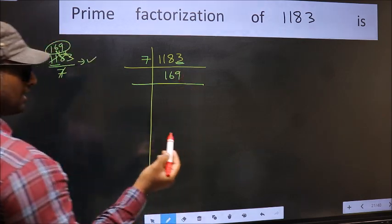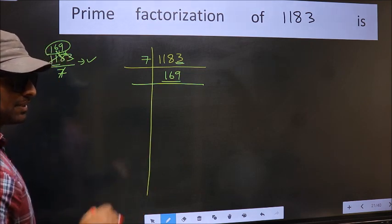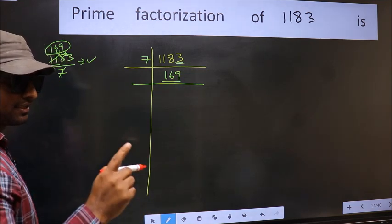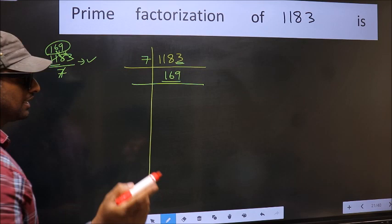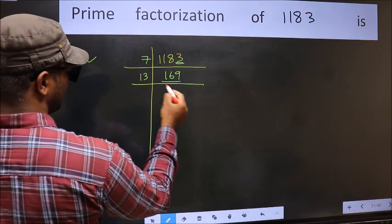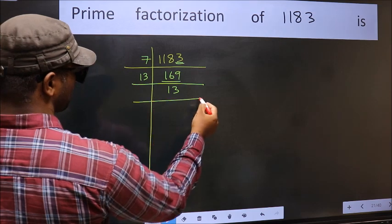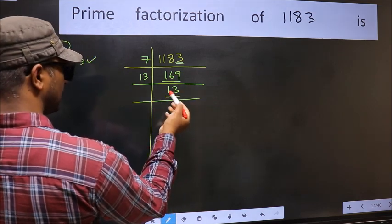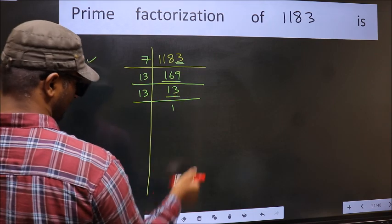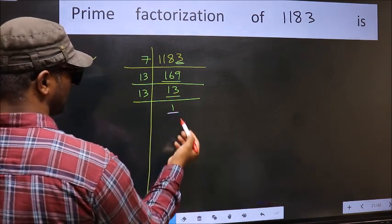Now we have 169. Always remember, 13 squared is 169 — that is 13 times 13 is 169. Here we have 13. Since 13 is a prime number, 13 once is 13, and we get 1 here.